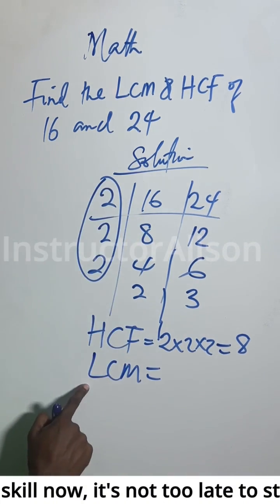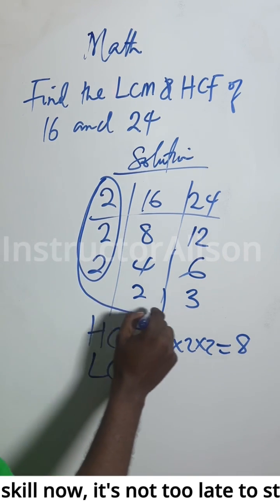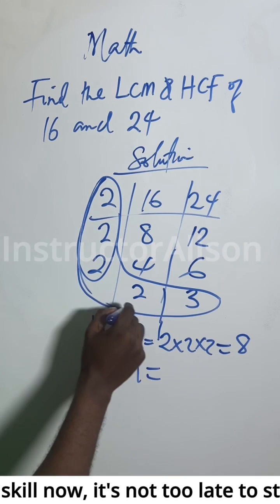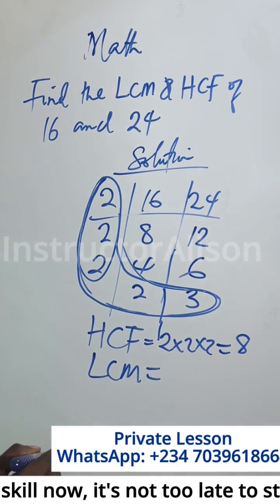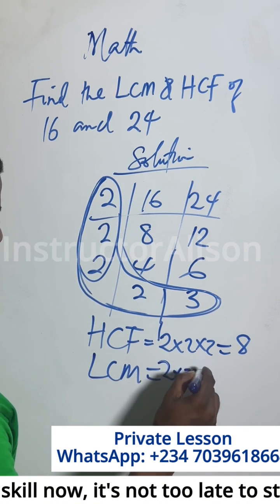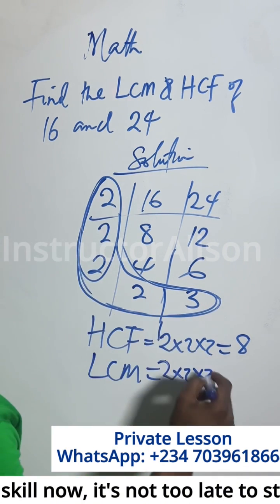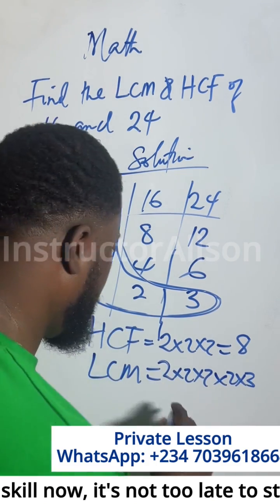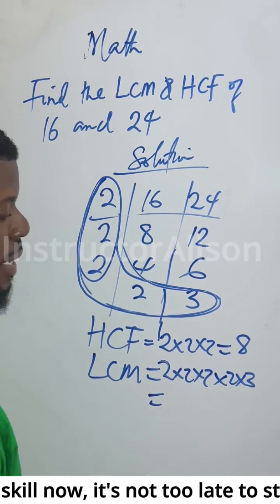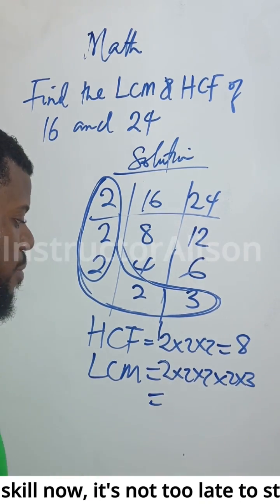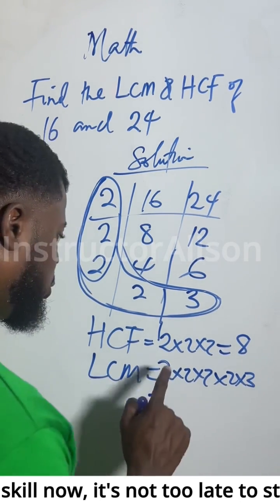To get the lowest common multiple, I'm going to use an L-shape. For the LCM, I have to multiply two by two by two for the left column, and then include the remaining values two and three.